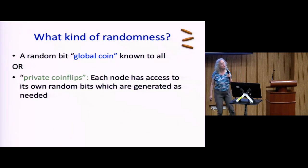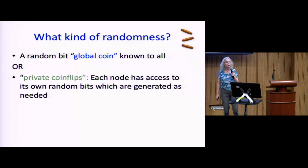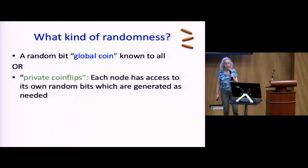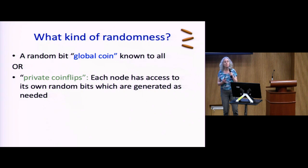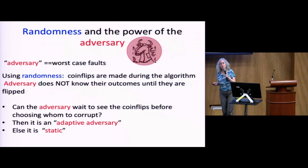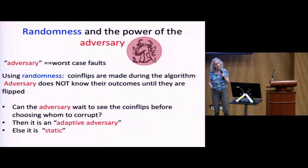What kinds of randomness are there? You could imagine a global coin — everybody can look up something like the last bits of the stock market report in the newspaper, which is a random string known to everybody. Another possibility is that each node has its own random coins it can toss at any time, but no one else knows what its coins are — no global coin. Once you introduce randomness into the model, you end up with many possible ways to think about the model.